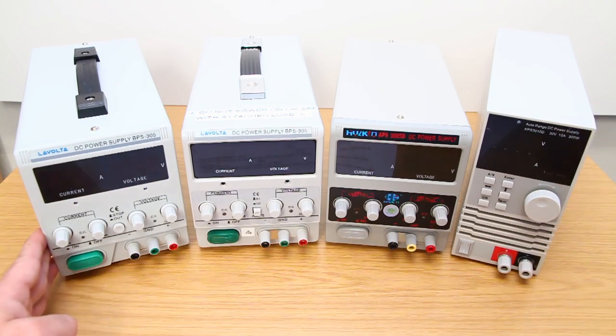The AVR3010D switch mode power supply had more ripple than the well-performing linear power supplies, but it was at higher frequencies, above 100 kilohertz. In the next video, I would like to find out what exactly causes this high ripple with the new LaVolta BPS305 Mark II power supply and try to fix it.